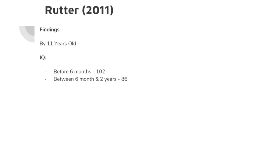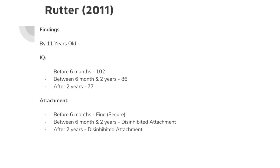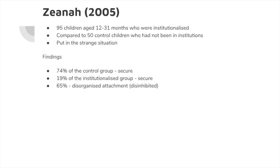By age 11, the IQ of those adopted before six months averaged 102 — within the average range. Those adopted between six months and two years had an average IQ of 86. Those adopted after two years had an average IQ of 77. This suggests a relationship between when you're adopted and later IQ development. In terms of attachment, those adopted before six months were able to develop secure attachments. However, for others the most common attachment type was disinhibited — attention-seeking, clingy, indiscriminate, and having multiple carers — which is a negative outcome. Zeanah was another supporting study in Bucharest: of 95 institutionalised children, only 19% were securely attached compared to 74% of the control group, with more disorganised and disinhibited attachment in the institutionalised group.